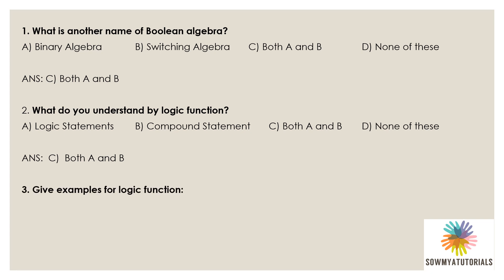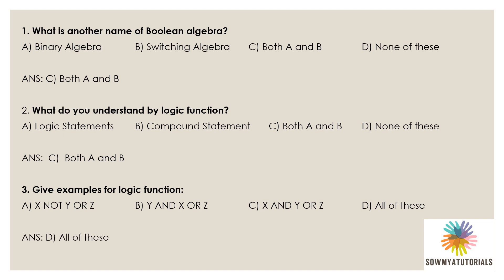Next question: give an example of a logic function. Logic functions are combined with the help of logical operators like AND, OR, and NOT. The options are: A) X̄ OR Z, B) Y AND X OR Z, C) X AND Y OR Z, D) All of these. The correct answer is option D, all of these, because all the logical operators AND, OR, and NOT are present in these expressions.